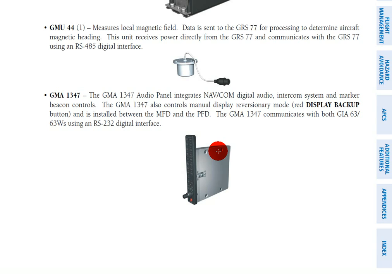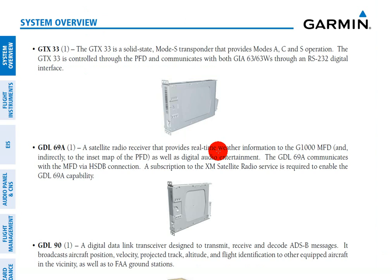Next we have the GTX 33. We need a transponder in our aircraft, and that's exactly what this is — a solid-state Mode S transponder that provides Mode A, C, and S operation.